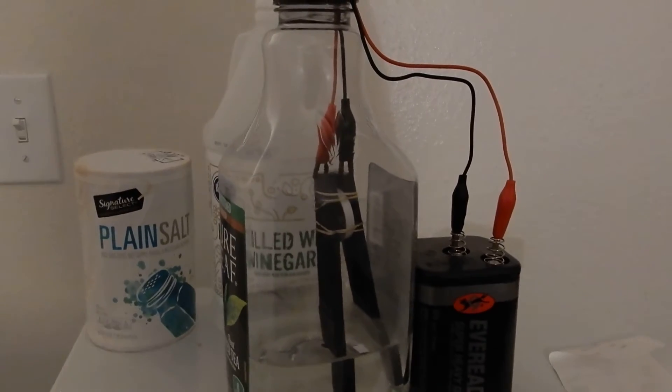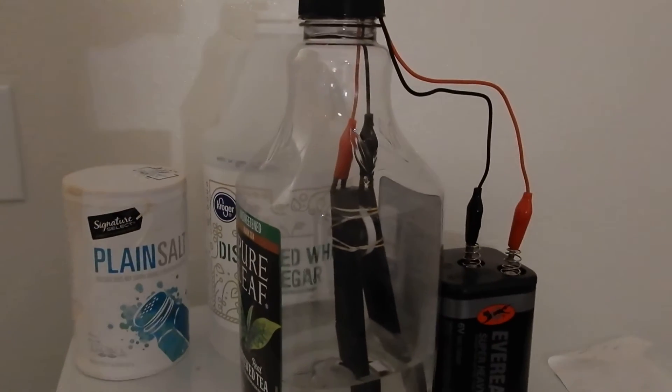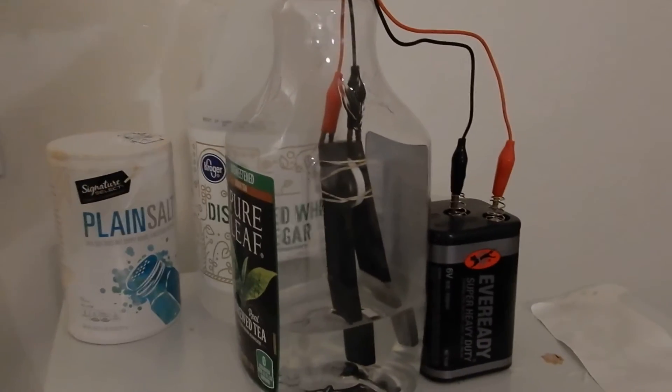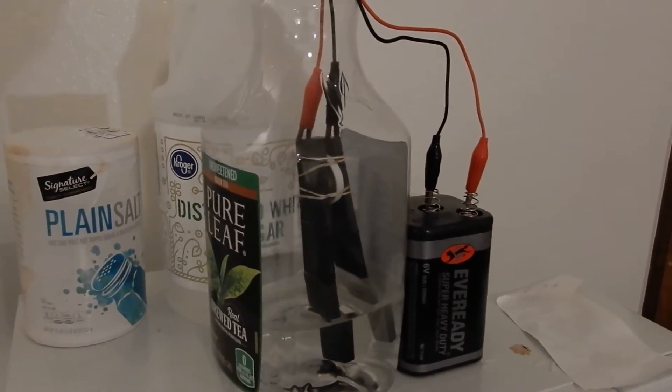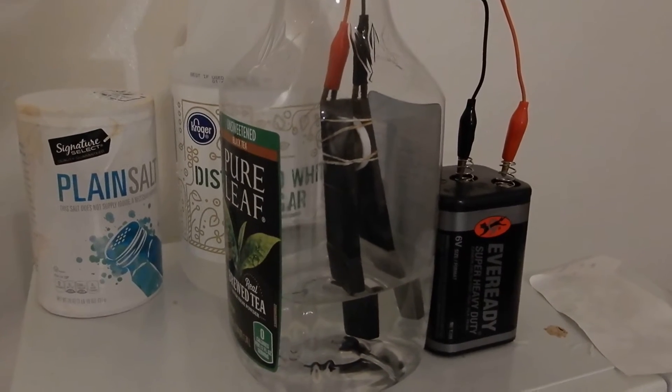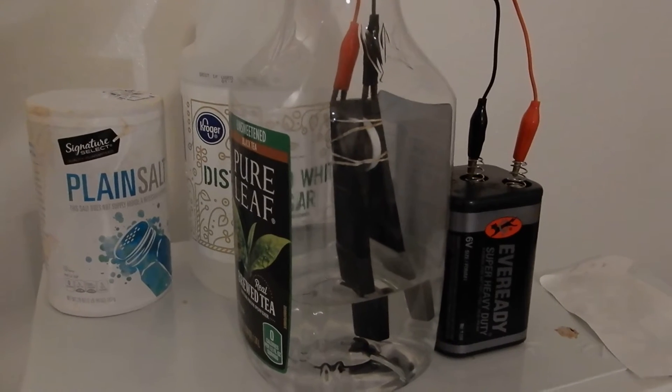About a week ago I shot a video about how to make bleach by electrolysis of salt water. But I did some more digging online and I learned that the active ingredient that makes bleach disinfect things is actually hypochlorous acid.